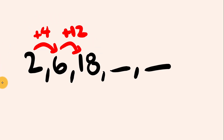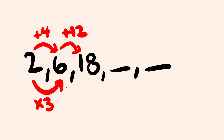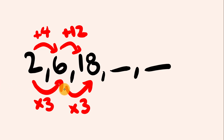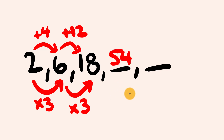Let's check if we have a geometric sequence — are we multiplying to get the next term? 2 times 3 is 6, and 6 times 3 is 18. We have a geometric sequence — we're multiplying by 3. So 18 multiplied by 3 is 54, and 54 multiplied by 3 is 162.